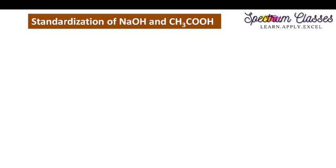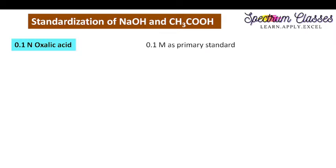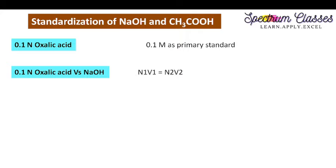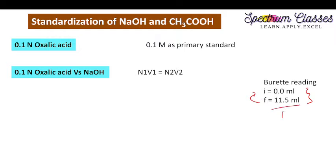First I prepared the NaOH solution and acetic acid solutions and standardized them. The detailed procedure is given in the oxalic acid versus NaOH volumetric titration video — the link will be in the description box. Oxalic acid was prepared at 0.1 normal by dissolving 0.63 grams in 100 ml. With this oxalic acid I titrated NaOH, and the burette readings show 11.5 ml of NaOH consumed against 10 ml of oxalic acid.